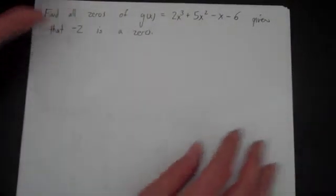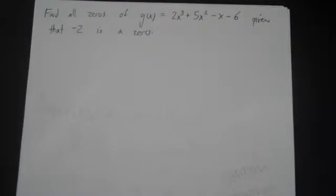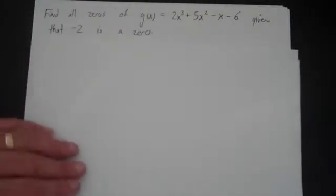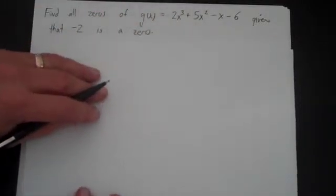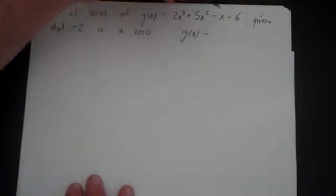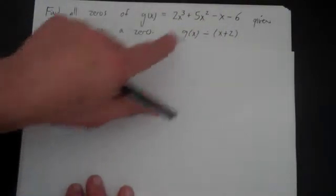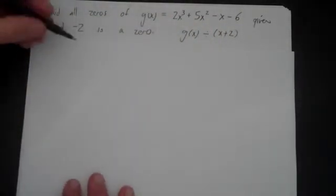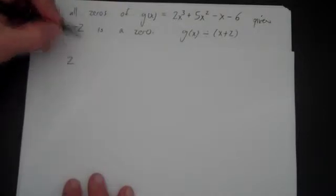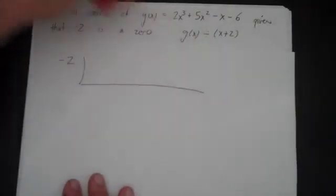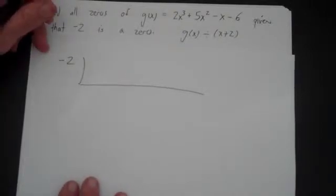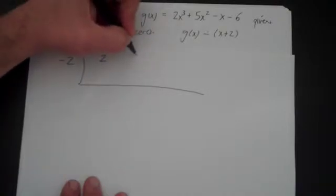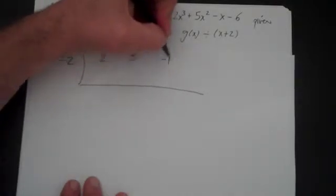Let's go on to the next problem. Find all the zeros of g(x) given that minus 2 is a zero — so you have one zero and you need to find the others. I'm going to divide g(x) by x plus 2. I'm going to use synthetic division, so I have minus 2 there. You have to be careful with your signs: the factor is x plus 2, so this will be minus 2. The zero is minus 2, and that remains the same. I'm going to put 2, 5, 1, minus 1, and minus 6 as the coefficients.